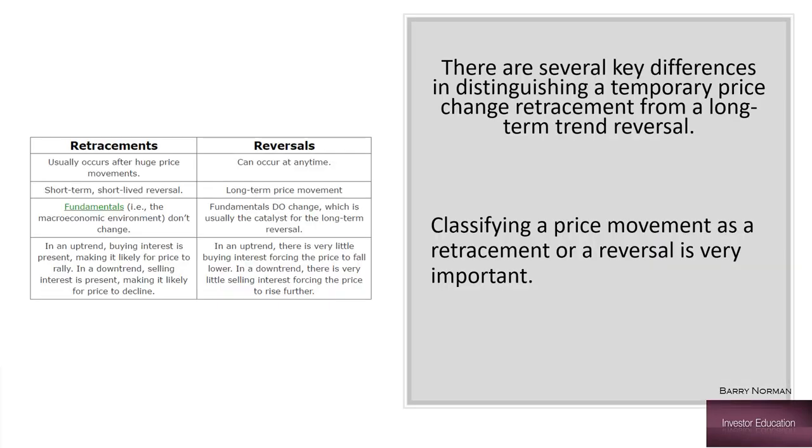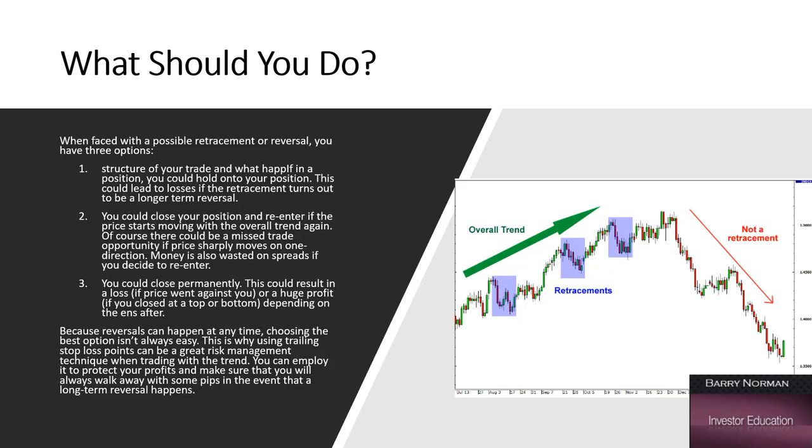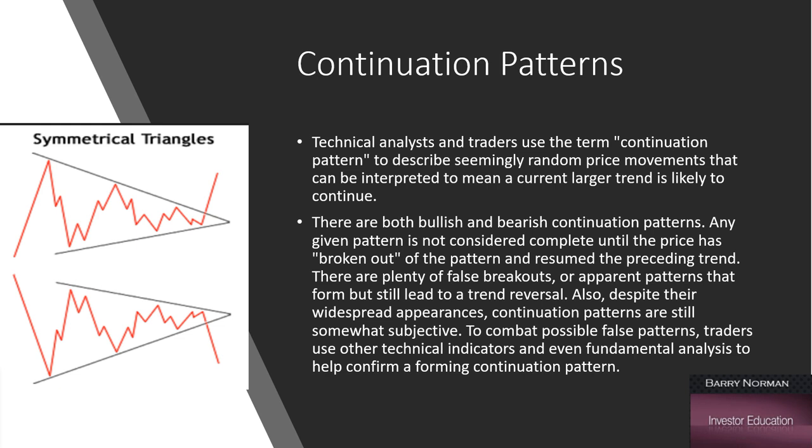So that's the basics for understanding chart patterns. Remember, technical analysis traders use the term continuation pattern to describe seemingly random price movements that can be interpreted to mean a current larger trend is likely to continue. There are both bullish and bearish continuation patterns. Any given pattern is not considered complete until the price is broken out of the pattern and resume the previous trend or reverse the previous trend. There are plenty of false breakouts, or apparent patterns that form but still lead to a trend reversal. Also, despite their widespread appearance, continuation patterns are still somewhat subjective.